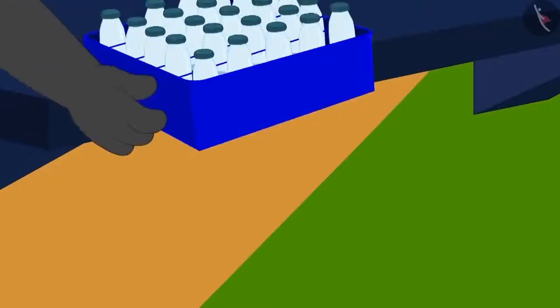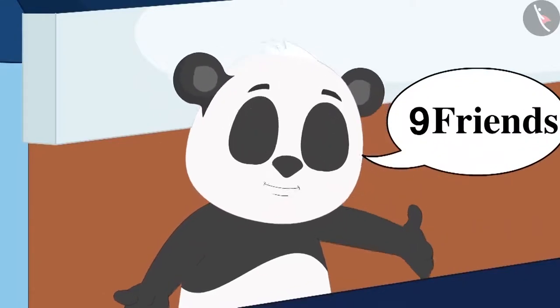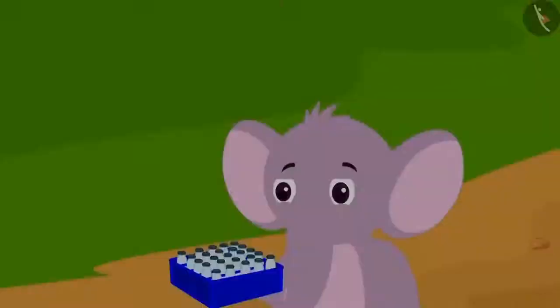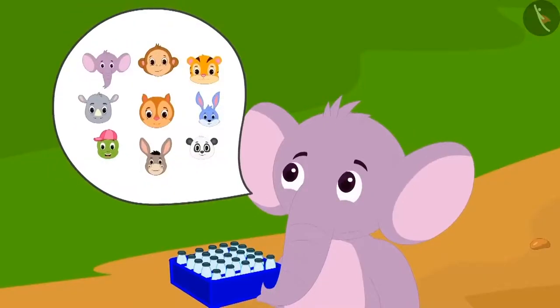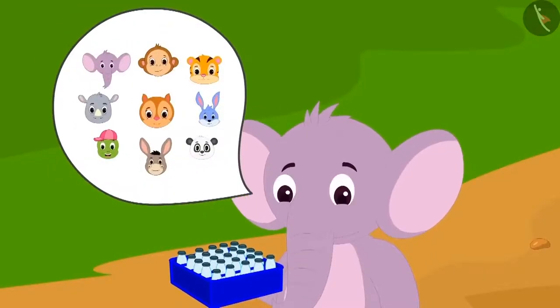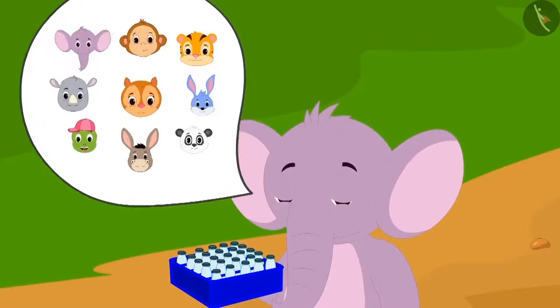Golu was delighted. He gave Appu 27 liters of milk, saying that all the 9 friends would equally share the milk and drink it. Children, can you tell how many liters of milk will each of Appu's friends get?